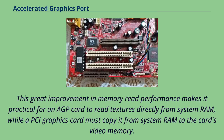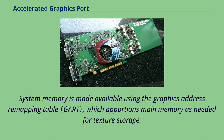This great improvement in memory read performance makes it practical for an AGP card to read textures directly from system RAM, while a PCI graphics card must copy it from system RAM to the card's video memory. System memory is made available using the graphics address remapping table, which apportions main memory as needed for texture storage.